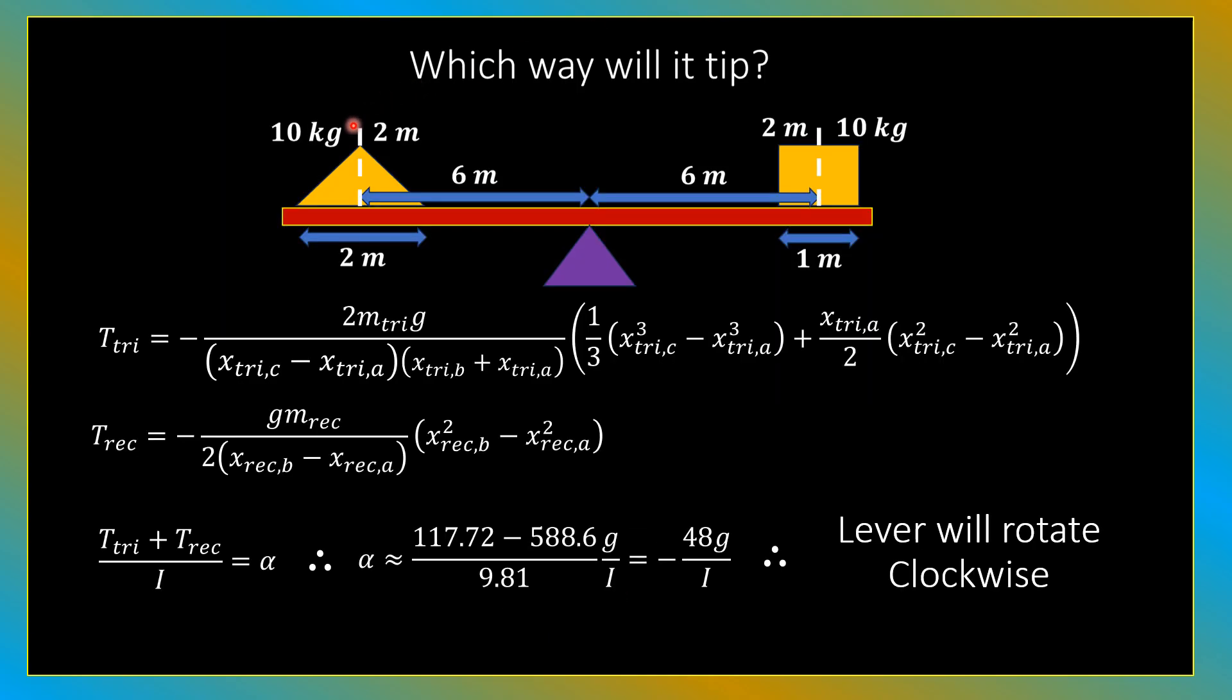Now let's go back to our original problem, in which we had the 10 kilogram masses. Both the triangular and rectangular masses are 10 kilograms. They're both 2 meters tall, but the height doesn't really matter in this case or in the general case either. Their centers are both 6 meters from the fulcrum of the lever, 12 meters apart total. The width of the triangular mass is 2 meters, the width of the rectangle is 1 meter, and the fulcrum is right there in the middle.